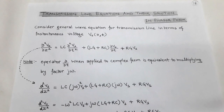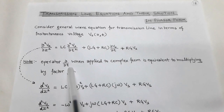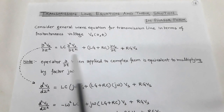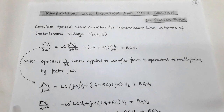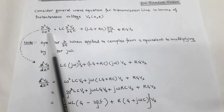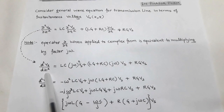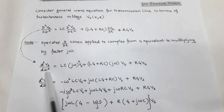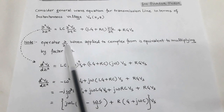Since this is a second order equation in sinusoidal form, the operator ∂/∂t when applied to complex form becomes jω. So here we replace ∂/∂t by the multiplying factor jω. As a result, ∂²V_s/∂z² gets converted into d²V_s/dz², and ∂/∂t is replaced by the factor jω.